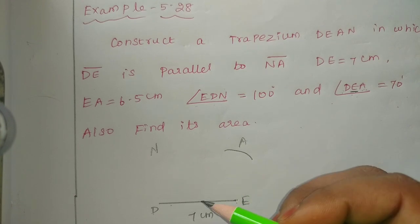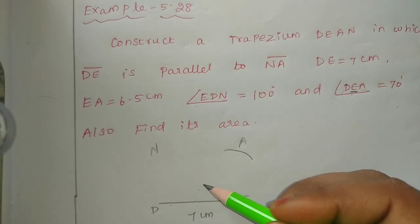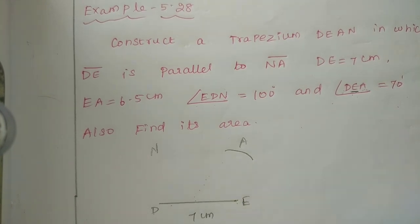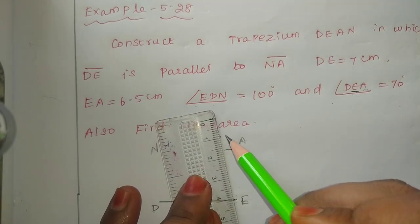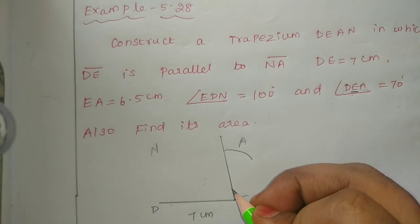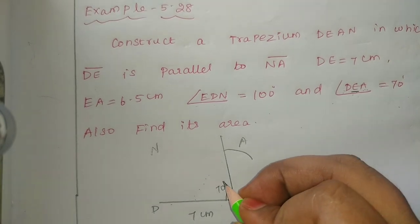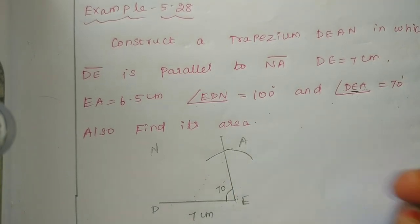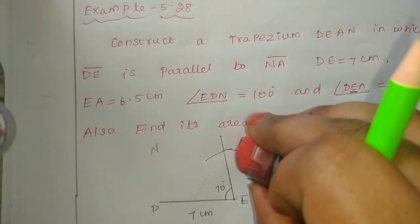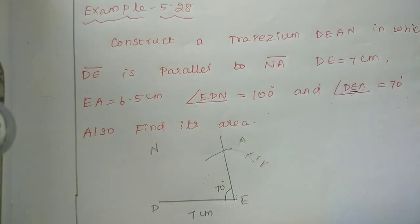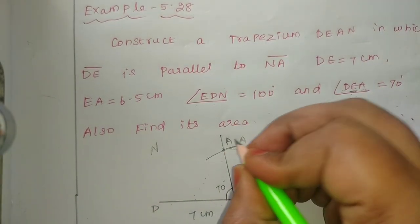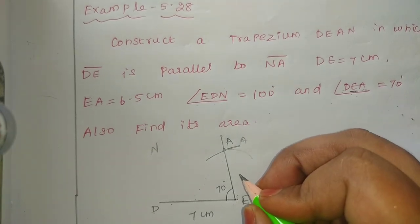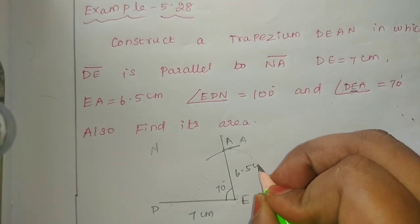We are going to use a protractor. We will start here: 20, 30, 40, 50, 60, 70. We cut this angle — this is angle A, this is 70 degrees. EA is 6.5cm.